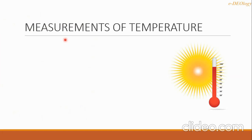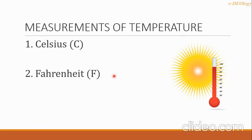Let's go now to the measurements of temperature. The first one is Celsius, symbolized by capital C. Second is Fahrenheit, with F as its symbol, and Kelvin with capital K as the symbol.